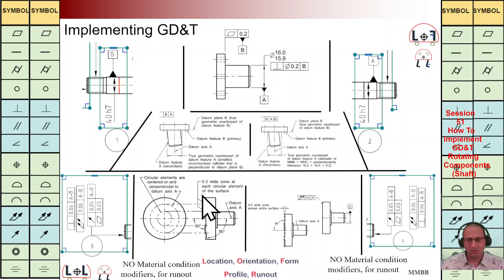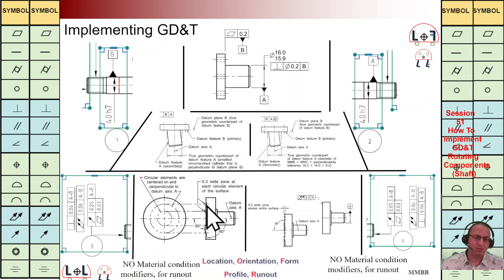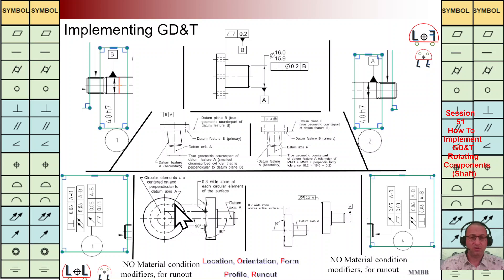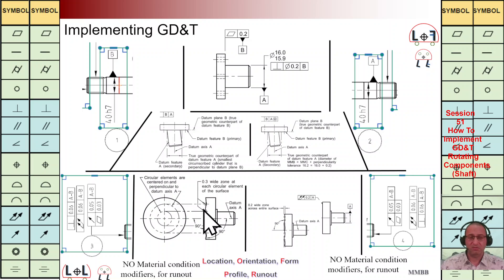I want to highlight the main difference between runout and total runout. If we use runout, for each cross section independently we control the orientation — that is runout. But for total runout, we control the whole surface; the tolerance zone is 0.2 and the whole surface should be within that interval. With runout, just that cross section has to be within the tolerance zone. It depends on the other tolerance zones: if you are going to have a tight tolerance zone for the size, use runout; if not, it is good to use total runout.